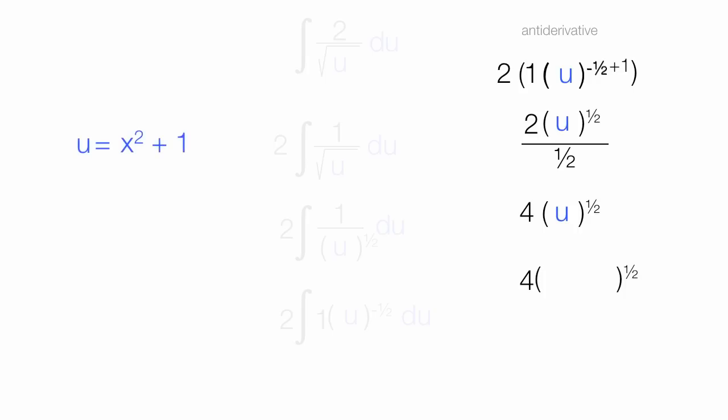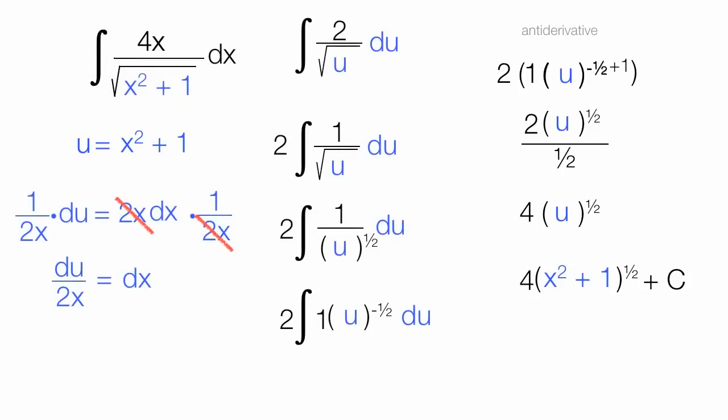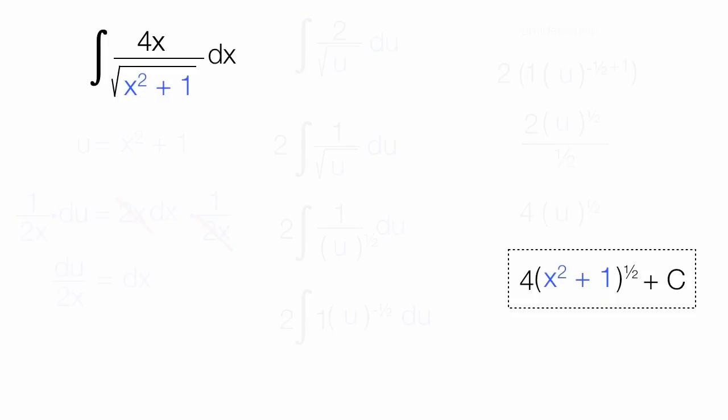And if I put the u back in, which is x squared plus 1, plus some constant, don't forget your c, plus a c, that's my answer right there. Let me get rid of everything else, and you'll see, there we go.